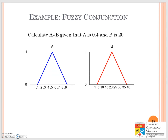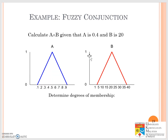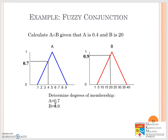Let's take another example: calculate A and B given that A is 0.4 and B is 20. So for A at 0.4, you draw a line and read the value from the graph. For B at 20, make a line and read the value. So determine the degree of membership first — A is 0.7 from that line, and B at 20 reads as 0.9. Remember it's a conjunction, so apply the minimum: C is 0.7.